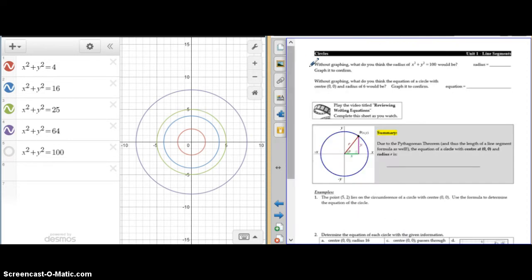Then you were asked, without graphing, what do you think the radius of this circle would be? Well, that is the orange circle right here. So, if you said the radius was 10, you've got it.